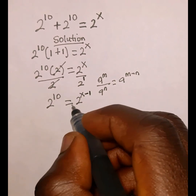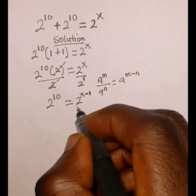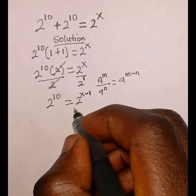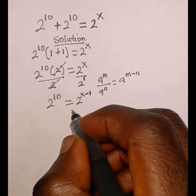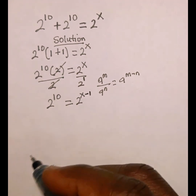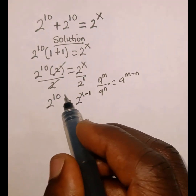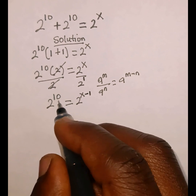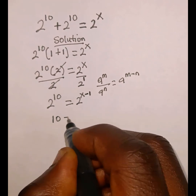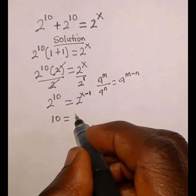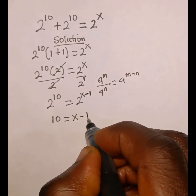Now we have the same bases, 2 and 2. When the bases are the same, the powers are also the same. So we cancel out the base and equate the powers. The first power is 10, which is equal to the second power, x minus 1.